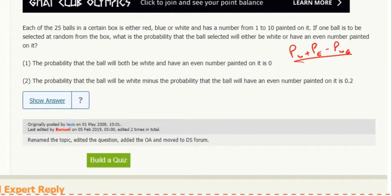Statement 1: The probability of both white and have an even number on it is 0. So I know this part is 0, but I don't know probability of white plus probability of even, so that's not sufficient.